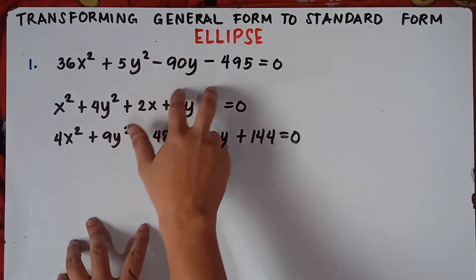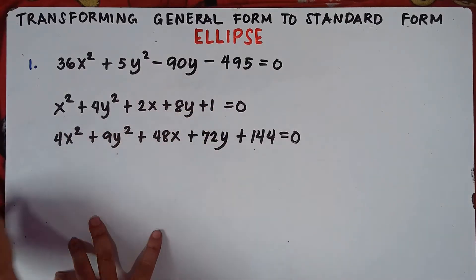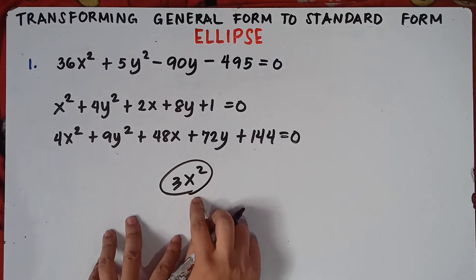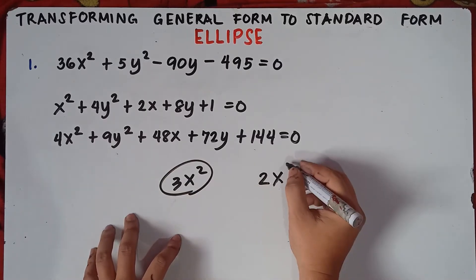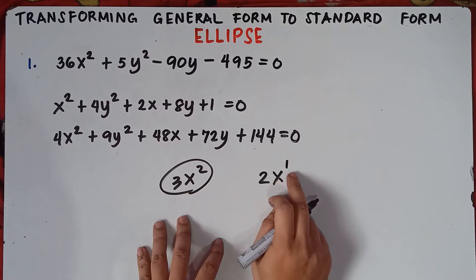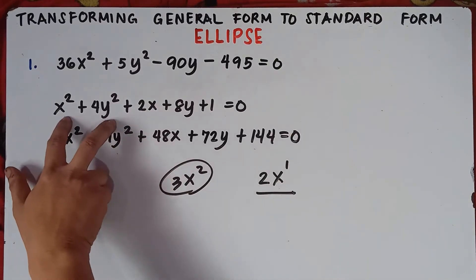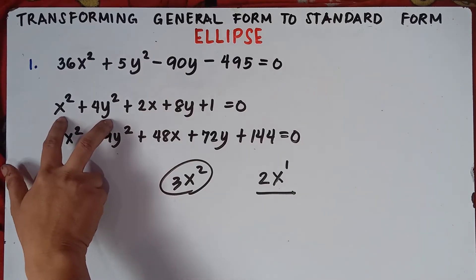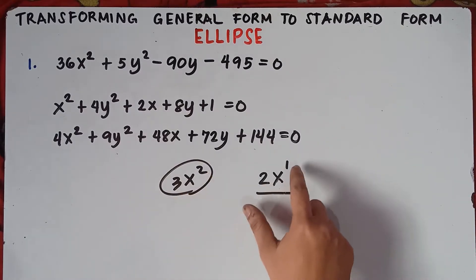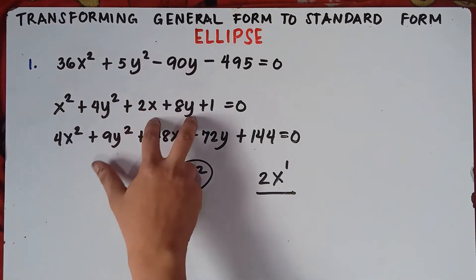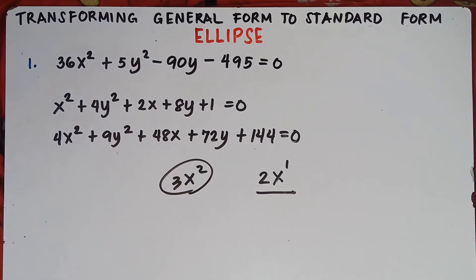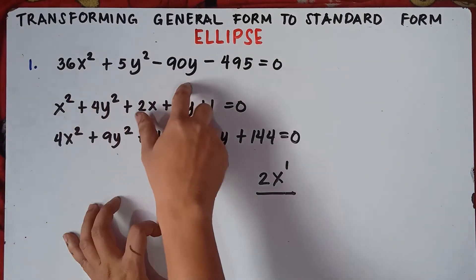This Part 3 is requested because it's different from the previous two. In those equations, we have two quadratic terms and two linear terms. A quadratic term is a variable with an exponent of 2; a linear term has a variable with an exponent of 1. Part 3 will be trickier since we have two quadratic terms but only one linear term.